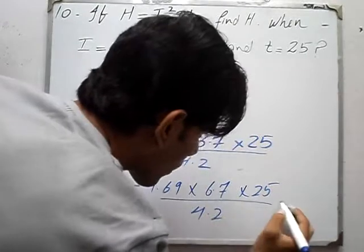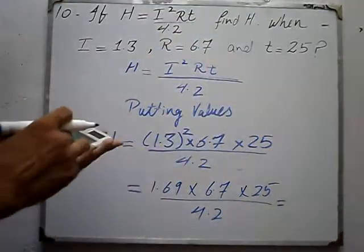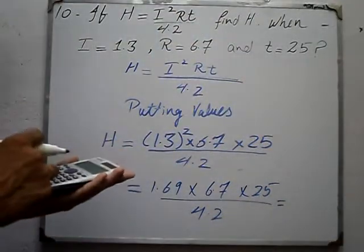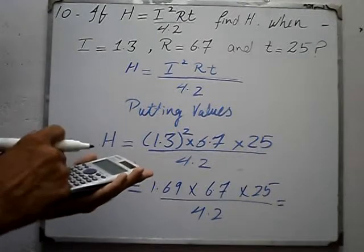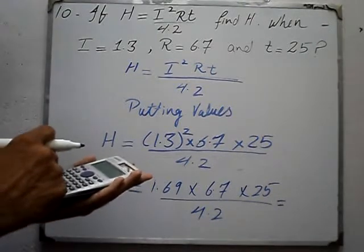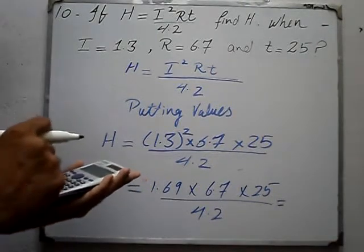Now multiply all the numerator terms: 1.69 multiply by 6.7 multiply by 25.